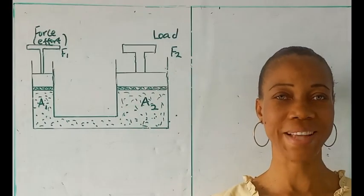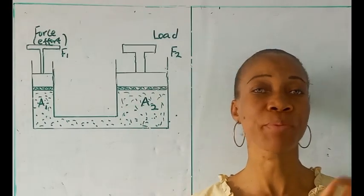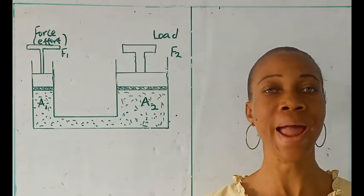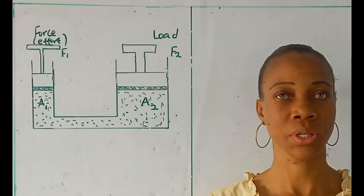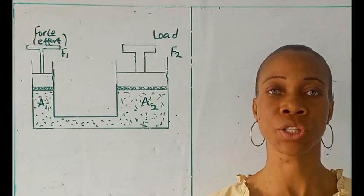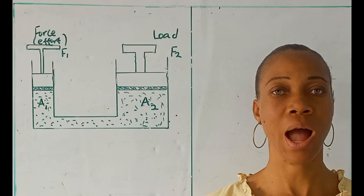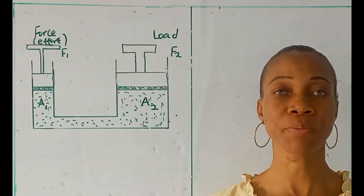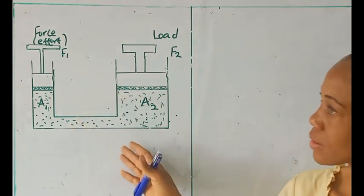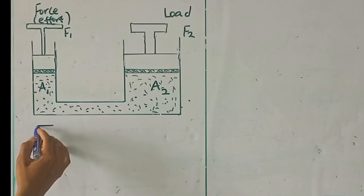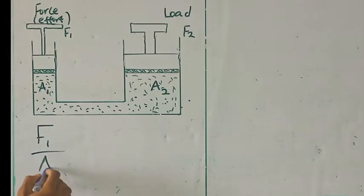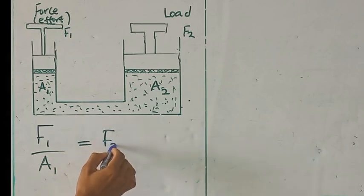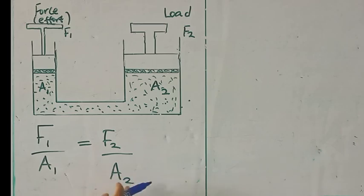Let's go to Pascal's principle. Pascal's principle states that the pressure applied to an enclosed fluid is transmitted undiminished to every portion of the fluid and to the walls of the containing vessel. The statement of Pascal's principle gives this. How did we come about this?